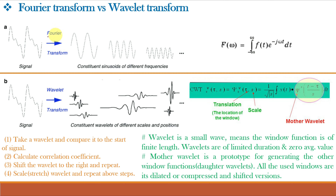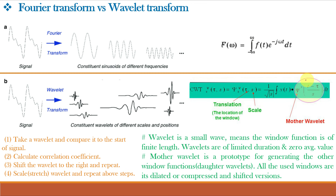If we take the Fourier Transform of a signal, the signal breaks down into constituent sinusoids of different frequencies. Similarly, if we take the Wavelet Transform, the signal breaks down into constituent Wavelets of different scales and positions. The equation of Continuous Wavelet Transform is given by Psi of Tau, S, where Tau is the translation or location of the window and S is the scale. The term Psi of (T minus Tau) upon S is known as the mother Wavelet, and the daughter Wavelets are the translated and scaled versions of it.